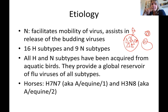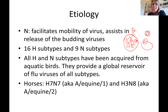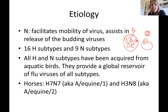There are 16 subtypes of hemagglutinin and 9 subtypes of neuraminidase, so you can have H1N1, H1N2, H1N3 — all sorts of combinations. That is how there is so much variation between influenza viruses.